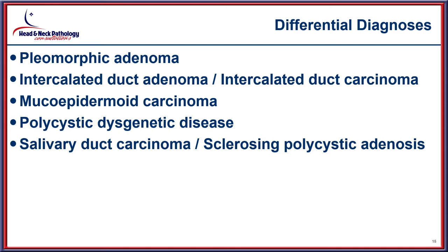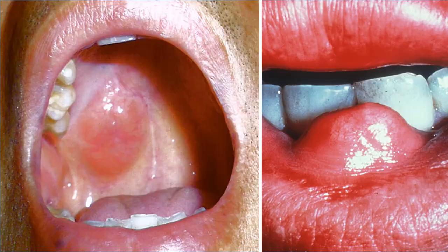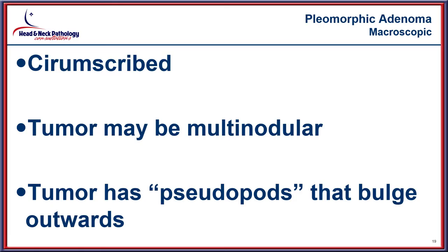Starting with pleomorphic adenoma as the most common salivary gland lesion, it should be considered every time. It occurs over a wide age range, with the parotid being the most frequent site. These tumors can be remarkably large — occurring in the palate or lip — covered by an intact mucosa and usually well circumscribed.